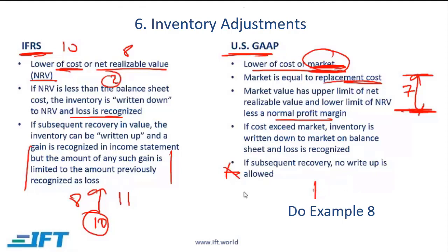The key difference between IFRS and US GAAP is that under IFRS you can write back up, but only to the original cost amount.